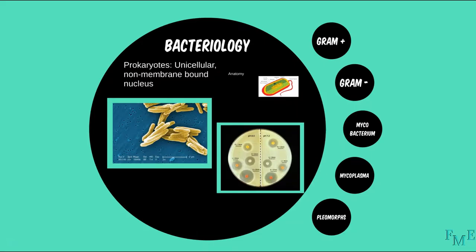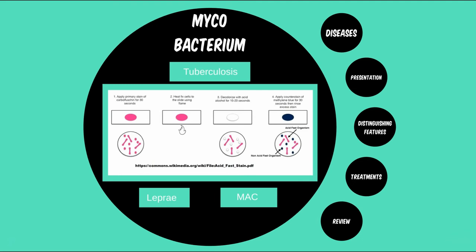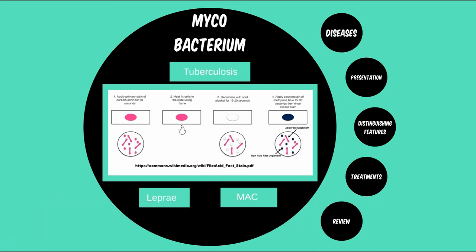Although the diseases caused by mycobacterium have been known for centuries, the pathogen had only been discovered in the 1880s. As we'll see, even today the microbe doesn't always behave. For instance, it would be nice if we could simply culture M. tuberculosis like many other bacteria, then stain it with the typical gram stain — it's just not that cooperative.